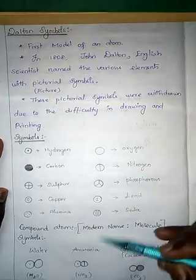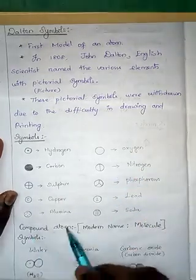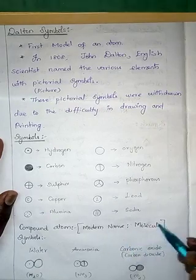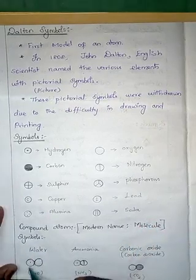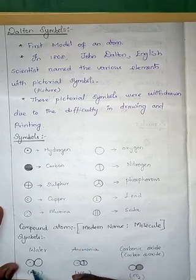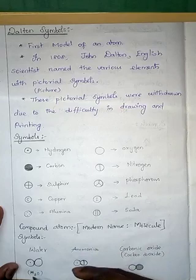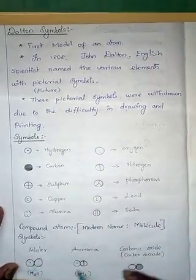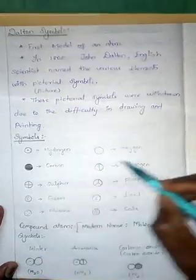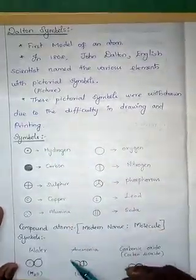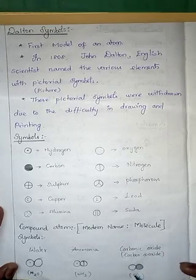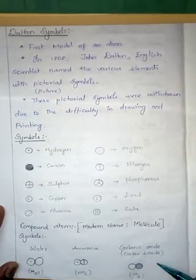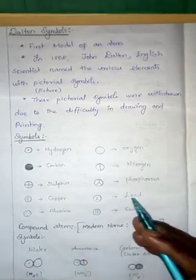A special feature of Dalton's symbols is that he gave symbols not only for elements but also for compound atoms — what we now call molecules in modern chemistry. For example, water consists of hydrogen and oxygen, so he connected the hydrogen and oxygen symbols. Ammonia is made up of nitrogen and hydrogen, so he connected those symbols. Carbon dioxide is made up of carbon and oxygen, so he connected those symbols and called it carbonic oxide.